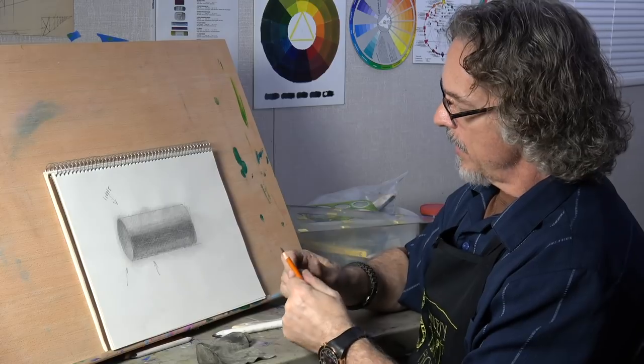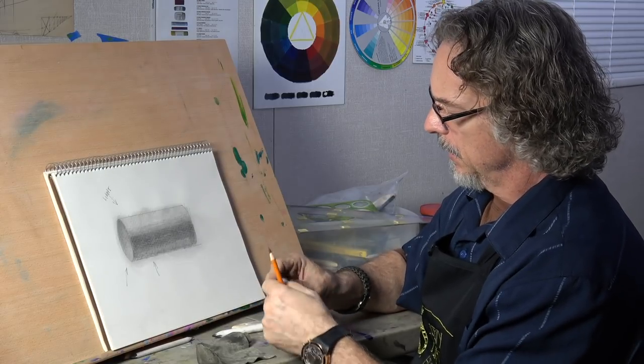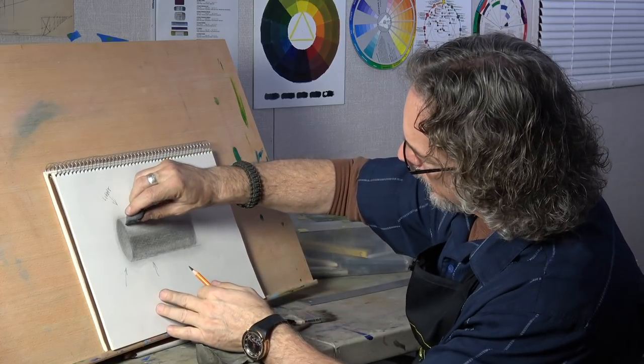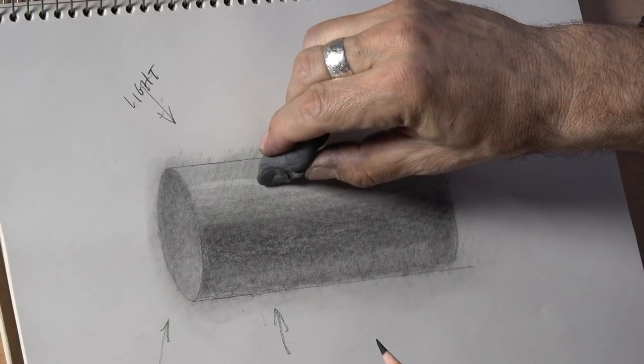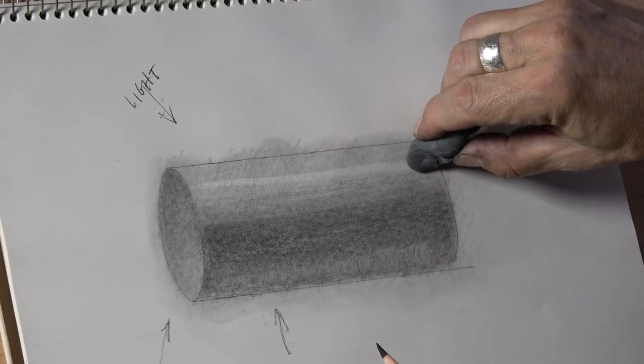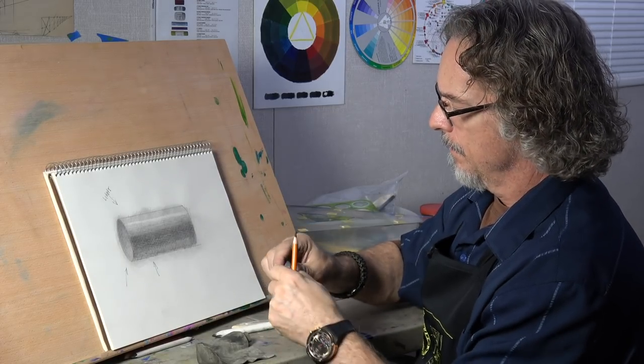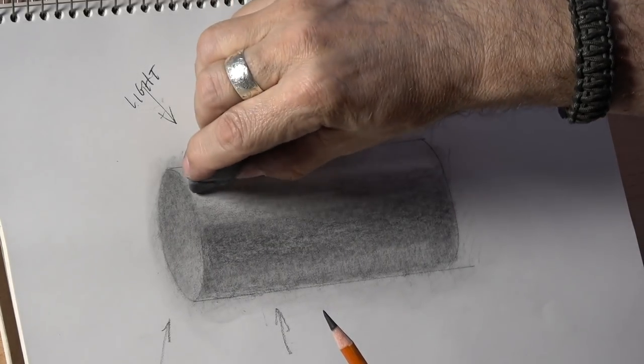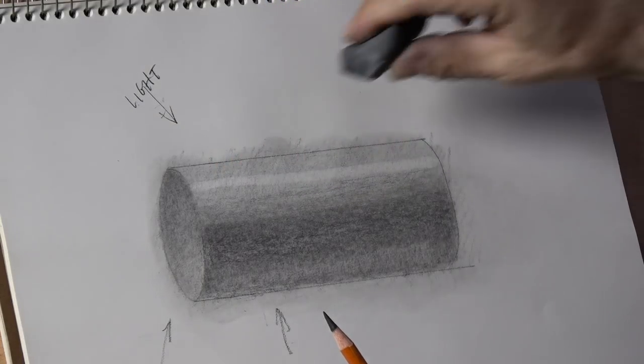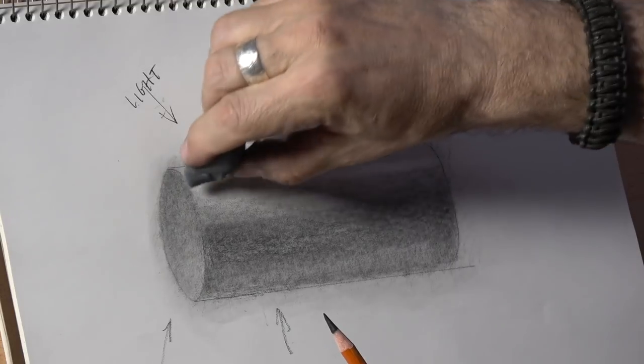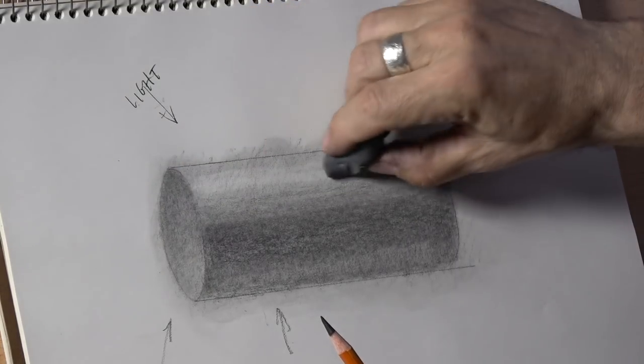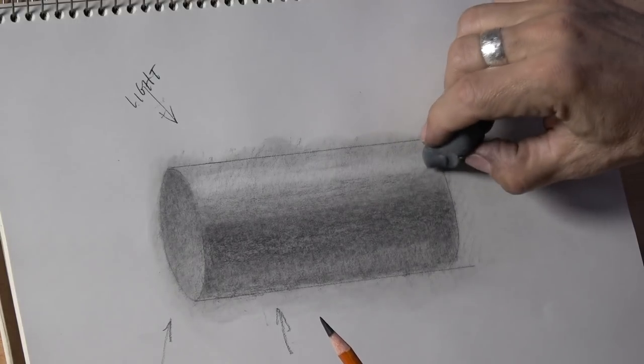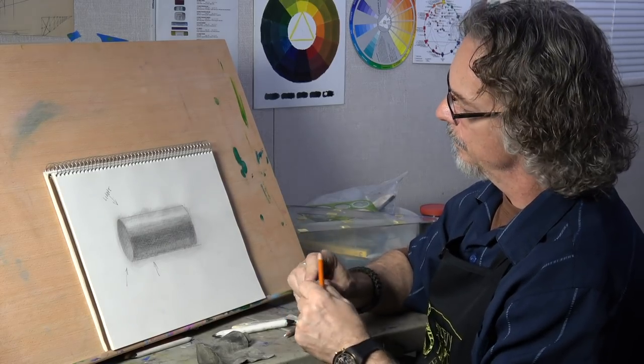Okay. Now we have our values in there. Now I can come back in, take out some of the charcoal with my kneaded eraser, and I can get that highlight across there. All right, now we have a highlight going on in there. Looking good so far.